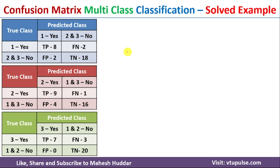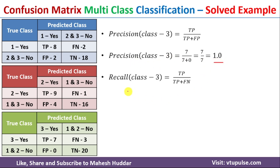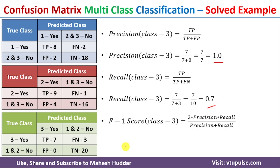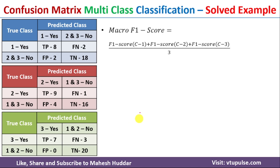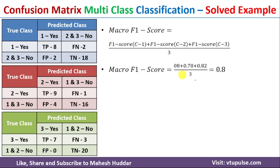For class 3, using the same equations with values from its confusion matrix: precision is 1.0, recall is 0.7, and F1 score is 0.82. Next we calculate the macro F1 score, which equals (F1 score of class 1 + F1 score of class 2 + F1 score of class 3) / 3 — dividing by 3 because we have three classes. Putting in the calculated values gives a macro F1 score of 0.8.